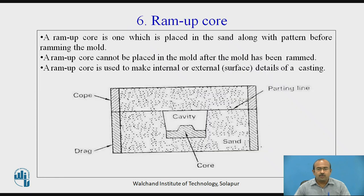Ram up core. A ram up core is one which is placed in the sand along with the pattern before ramming the mold. A ram up core cannot be placed in the mold after the mold has been rammed. It is used to make internal or external surface details of the casting.